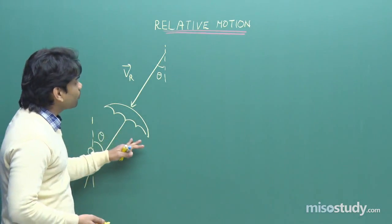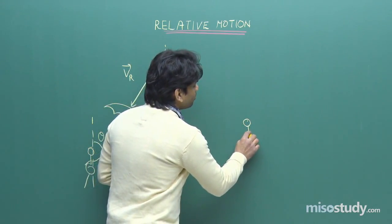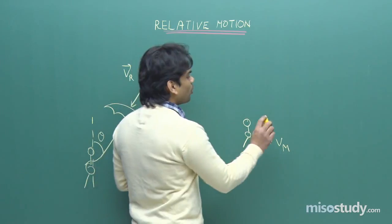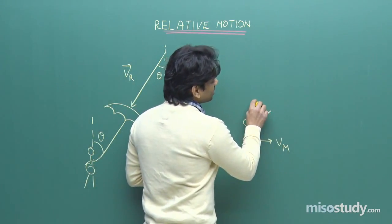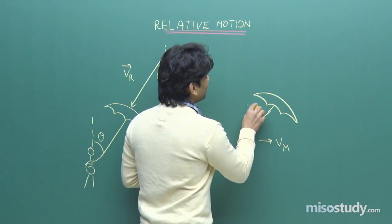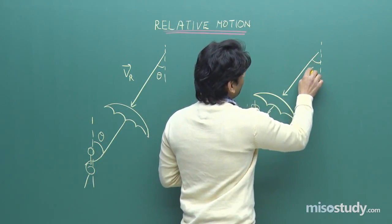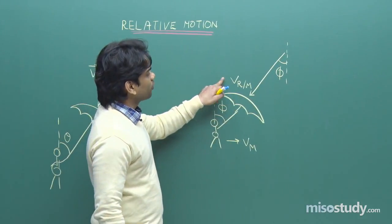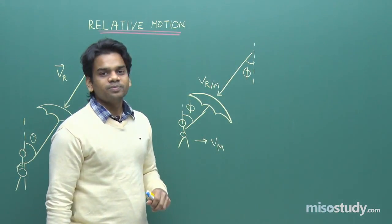Now suppose you are running or walking with some speed. You do not have to hold the umbrella in the same direction. Let's say your velocity is V_M, the velocity of man. You will feel that the rain is falling at a different angle, given by phi. Rain will appear to you falling at angle phi — that means this is the velocity of rain with respect to man. You have to hold the umbrella in this direction when you are moving.